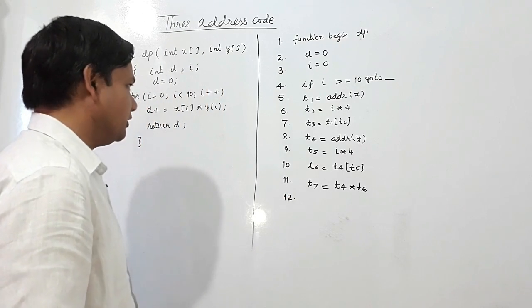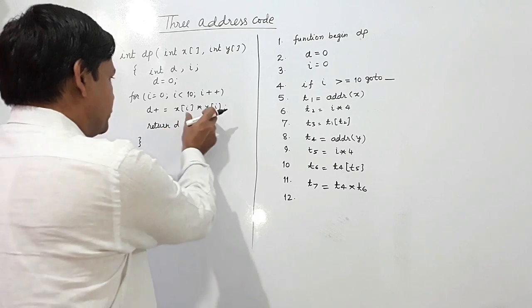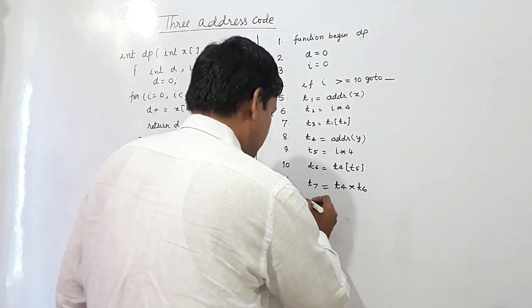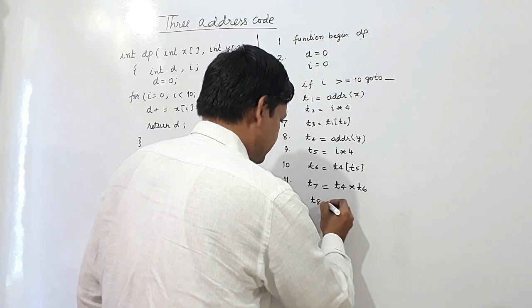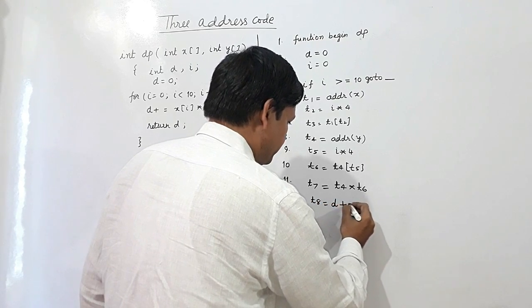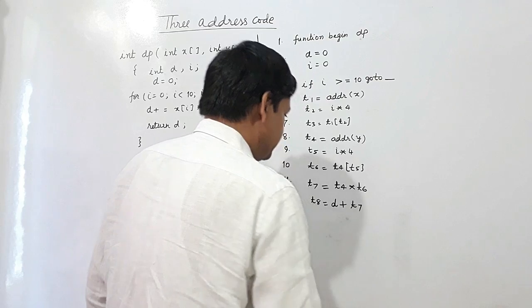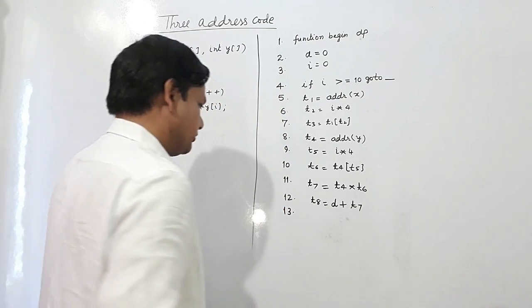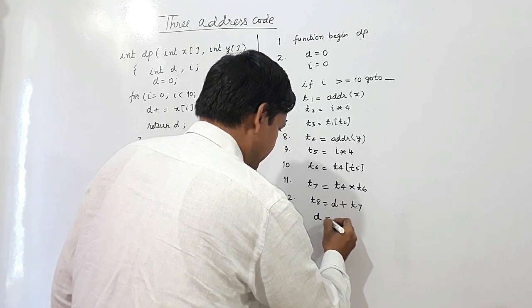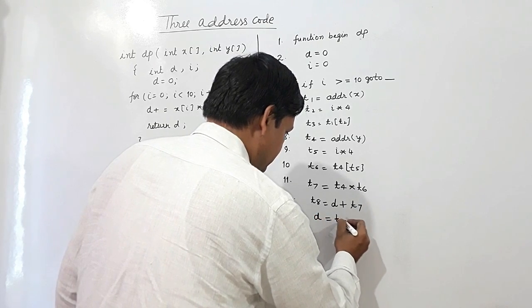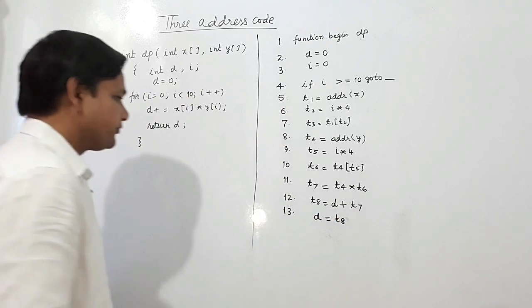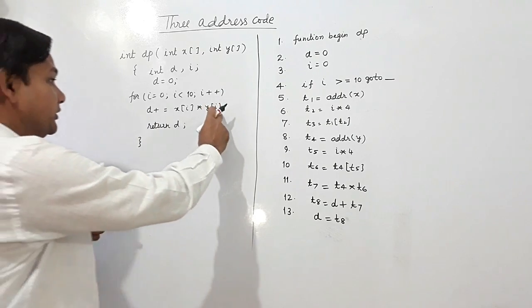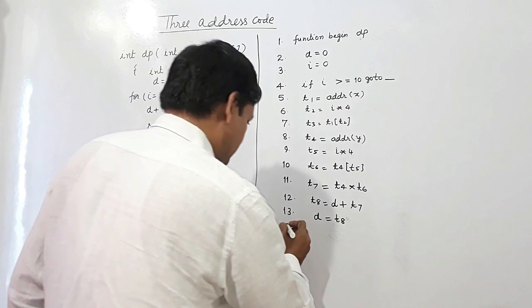Number 12, what is happening now? This product is being added with d. So t8 is equal to d plus t7. And now line number 13, this t8 is being assigned into d.